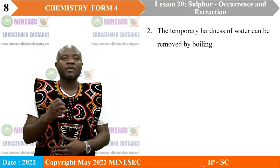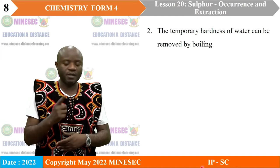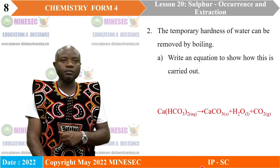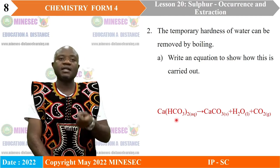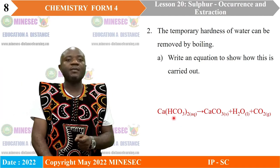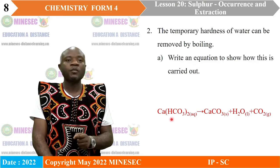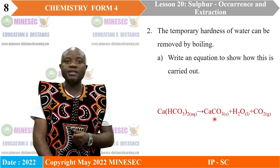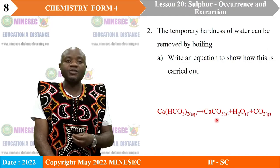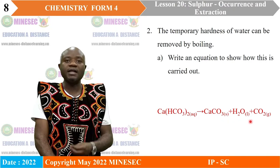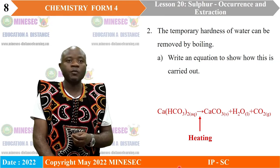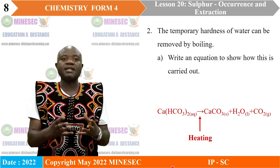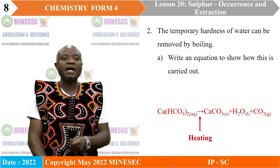Question number two: The temporary hardness of water can be removed by boiling. A. Write an equation to show how this is carried out. The temporary hardness of water is caused by the presence of the hydrogen carbonate of calcium and magnesium. When calcium hydrogen carbonate in hard water is heated, it decomposes to produce calcium carbonate (a solid), water, and carbon dioxide. This type of hardness is known as temporary hardness because it can easily be removed by boiling.